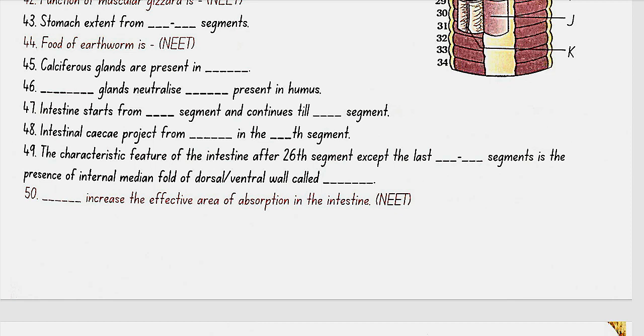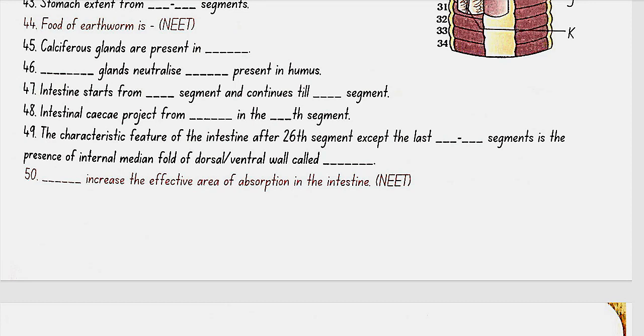Intestine starts from the 15th segment and continues till the last segment. Intestinal caeca project from the intestine till the 26th segment. The characteristic feature of the intestine after the 26th segment, except the last 23rd to 25th segments, is the presence of an internal median fold of the dorsal wall called the typhosole. Typhosole increases the effective area of absorption in the intestine.